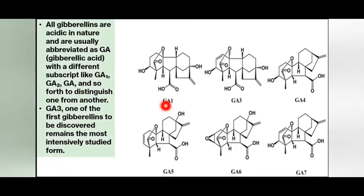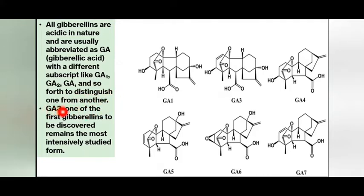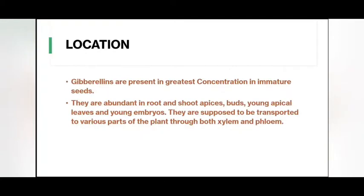All gibberellins are acidic in nature and are usually abbreviated as GA, that is gibberellic acid, with different subscripts like GA1, GA2, GA3, and so on, to distinguish one from another. GA3, one of the first gibberellins to be discovered, remains the most intensively studied form.